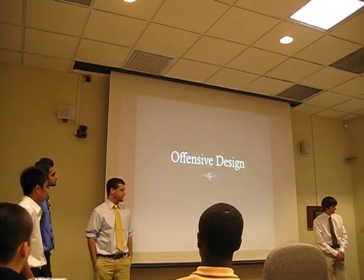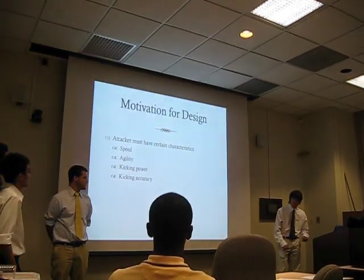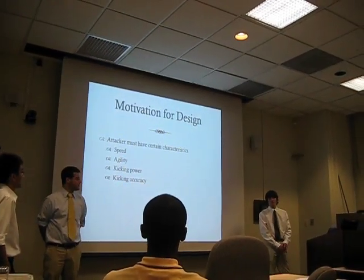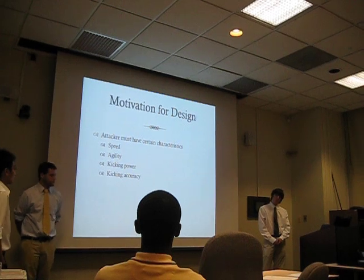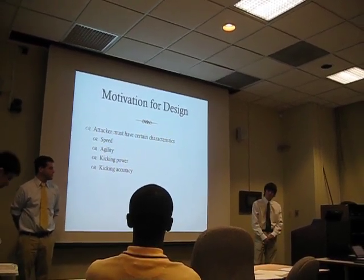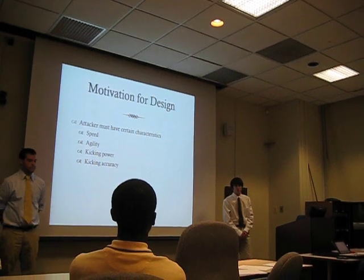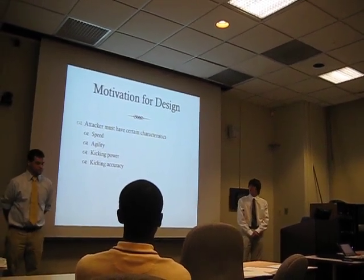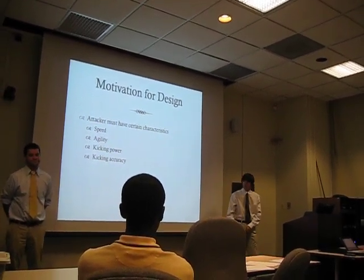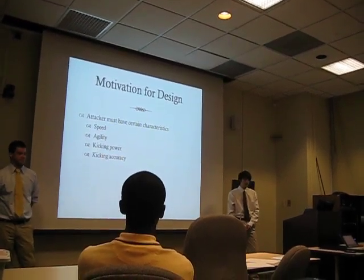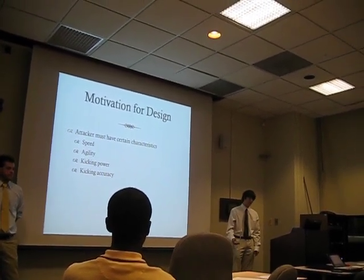That takes us to the offensive robot. The offensive robot actually turned out to be a lot more complex than the defensive robot, both in programming and in hardware. For research at the beginning of the project, we had to research strategies and examples of other robot soccer designs. We came up with the idea that the attacker has to have certain characteristics: it has to be fast to get to the ball, agile so it keeps the ball, and it needs kicking power and accuracy to be able to shoot the ball.